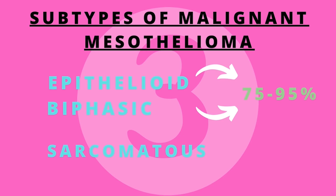Epithelioid and biphasic mesothelioma make up approximately 75–95% of mesothelioma and have been well characterized histologically, whereas sarcomatous mesothelioma has not been studied as thoroughly.